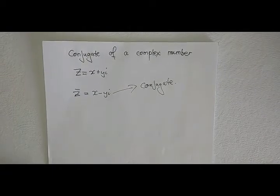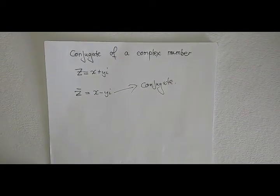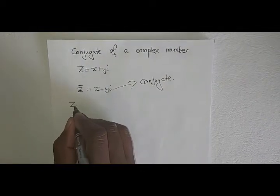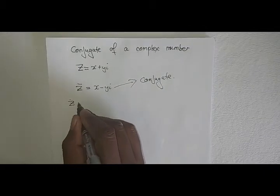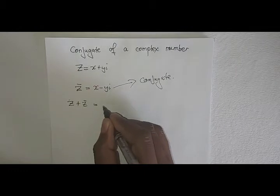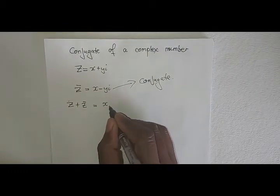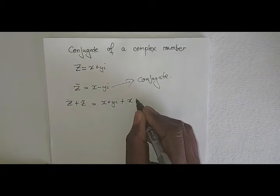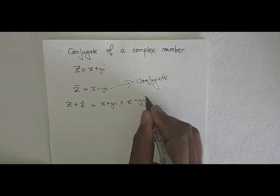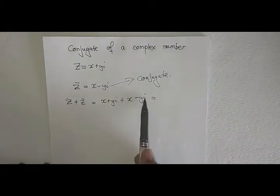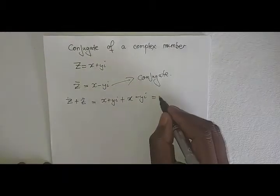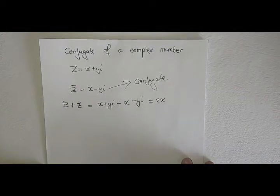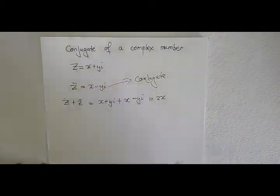Let's look at some properties. What happens when we add a complex number with its conjugate? Z plus Z-bar equals X plus Yi plus X minus Yi. The imaginary parts cancel, and it becomes 2X. Therefore, when you add a complex number with its conjugate, the result is simply 2X.